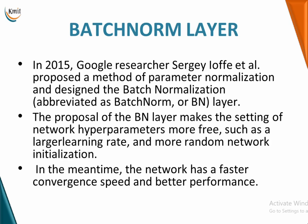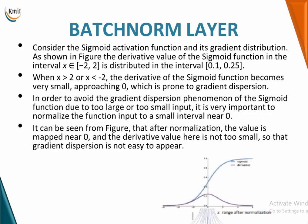Now we discuss the batch norm layer — a different type of layer introduced by Google researcher Sergey Ioffe in 2015. It was designed to normalize parameters, because with the many parameters in deep neural networks like CNNs, normalization became necessary. The batch norm (BN) layer automates this, allowing larger learning rates and more random network initializations, while also providing fast convergence and better network performance.